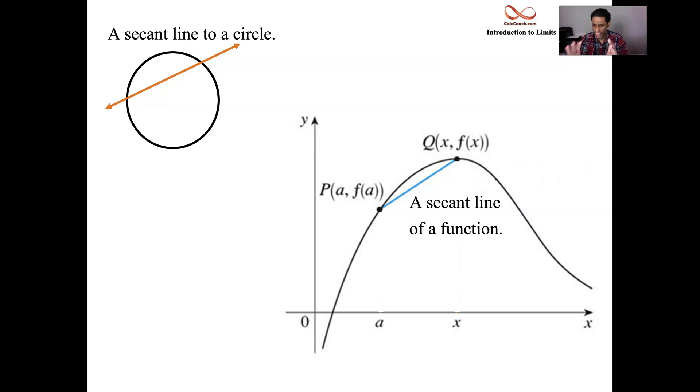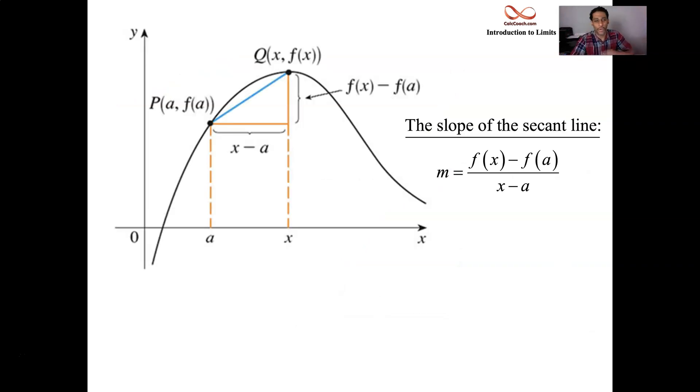All right, you start at x equals a and then you have x equals x as the right end point. You plug those values into the function. So the y value at a is called f of a, the y value at x is called f of x. And we can use that as an approximation to the slope of the tangent line. The further away you are, the worse the approximation is.